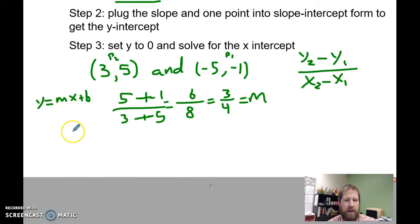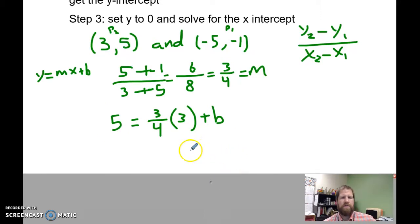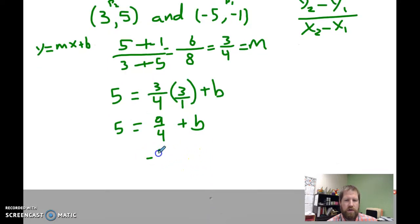I'm going to fill in my m, 3 quarters, my x value, I'm going to use this point because it's positive, it'll probably be easier. It's going to be times 3. Plus b equals 5. And now, let's see if this turns out to be ugly or not. 3 over 4 times 3 over 1 is going to give me 9 fourths plus b equals 5. Subtract 9 fourths from both sides.